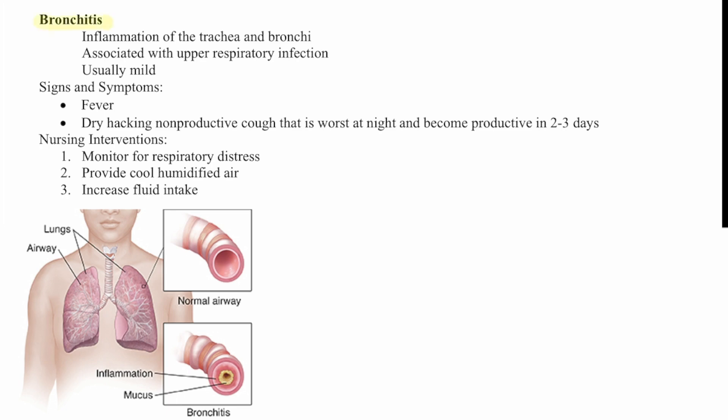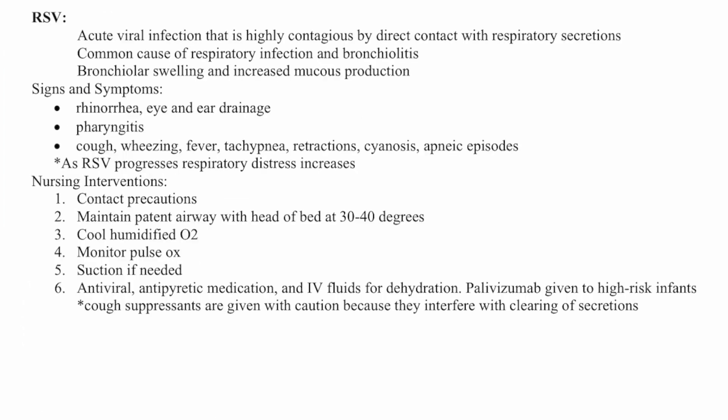Next we have bronchitis — inflammation of the trachea and bronchi associated with upper respiratory infection. It's usually mild. You'll see a fever and a dry, hacking, nonproductive cough that's worse at night and becomes productive in two to three days. Monitor for respiratory distress, provide cool humidified air, and increase fluid intake.